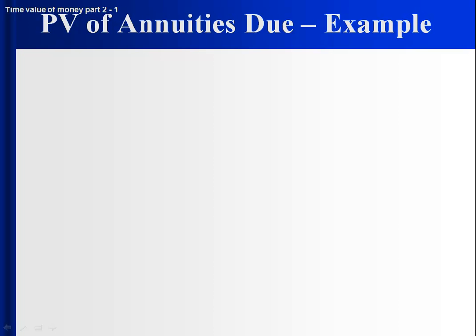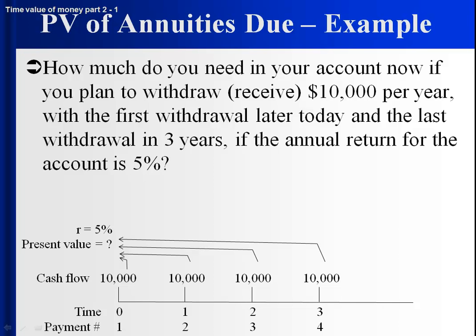This is Steve Piloff from George Mason University. Let's take a look at an example. How much do you need in your account now if you plan to withdraw $10,000 per year? The first withdrawal is later today, so we've got $10,000 later today. And the last withdrawal — these are annual withdrawals — is in three years, so in three years you're going to take out $10,000.